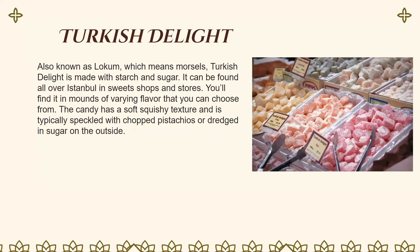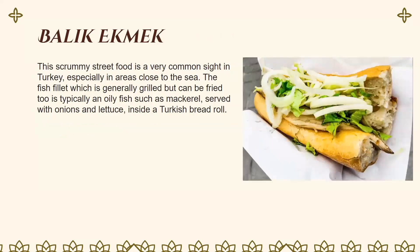Turkish delight, also known as lokum, meaning 'morsels,' is made from starch and sugar. It can be found all over Istanbul in sweet shops and stores in a wide variety of flavors to choose from. The candy has a soft, squishy texture and is typically speckled with chopped pistachios or dredged in sugar on the outside.